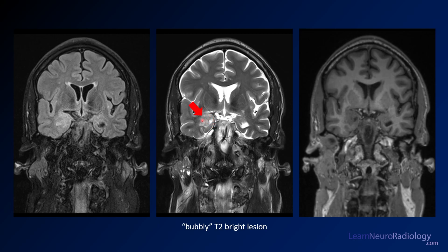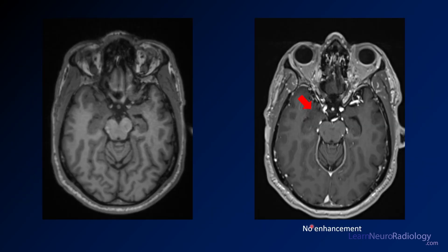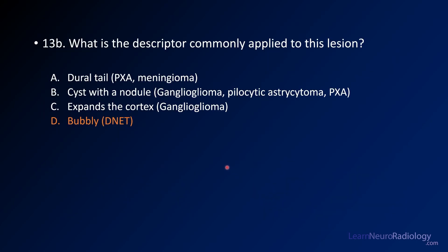Here the coronal T2 shows it best — you've got this kind of multi-lobulated lesion in the medial temporal lobe going into the hippocampus. On FLAIR, it's sort of ill-defined and expansile. On T1 you can see the medial temporal lobe is expanded. Here's the pre and post contrast — there's no enhancement of this lesion. So you've got a medial temporal lesion with no enhancement, and we have to think about low-grade tumors like ganglioglioma, DNET, maybe PXA or pilocytic astrocytoma.